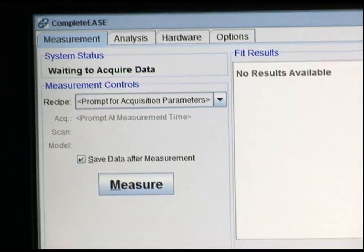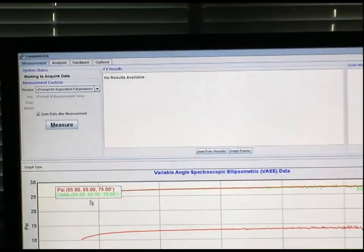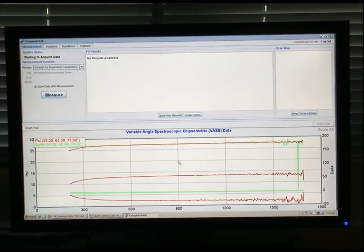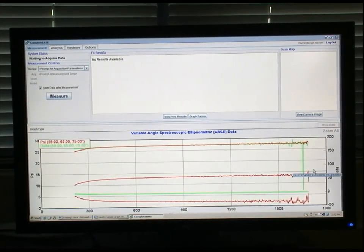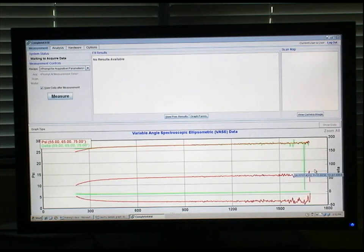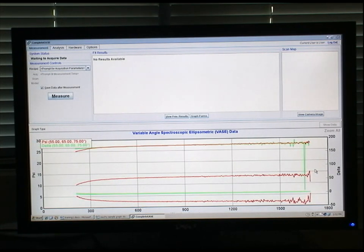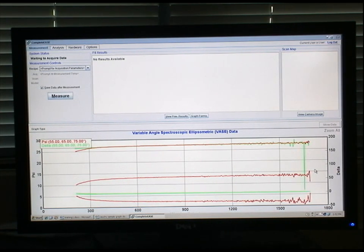What we have on our output, now that the measurement is done, is our psi and delta data as shown here. The data for angles of incidence at 55 degrees, 65 degrees, and 75 degrees are shown.